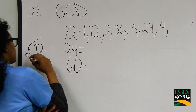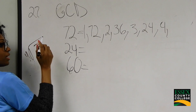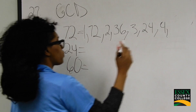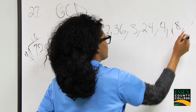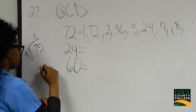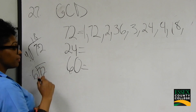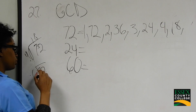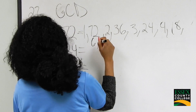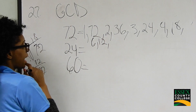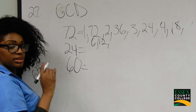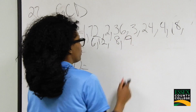72 divided by 4 is 18, so 4 and 18 are factors of 72. Can 5 go into 72? No. Can 6 go into 72? Yes — 6 into 72 is 12, so 6 and 12 are both factors of 72. Can 7 go into 72? No. Can 8 go into 72? Yes — 8 times 9 is 72. So those are all the factors of 72.